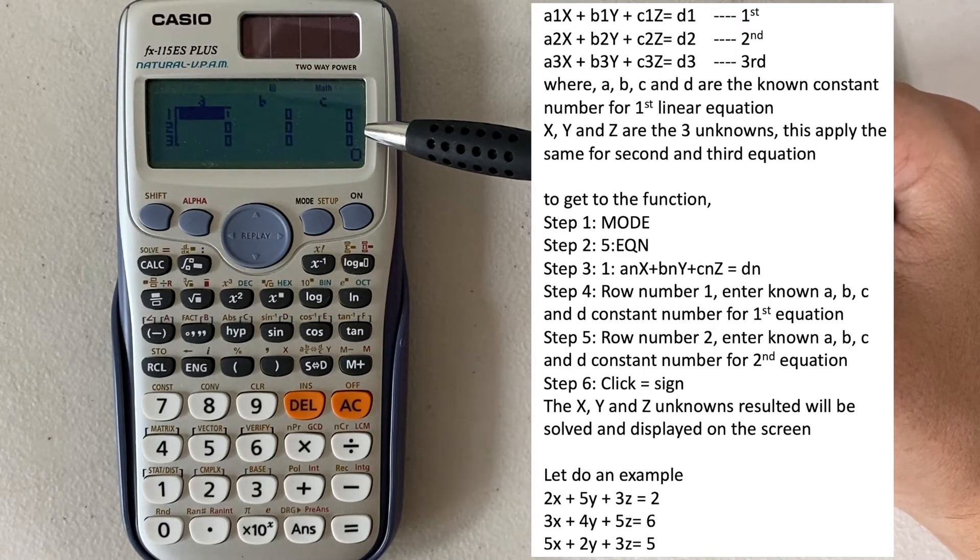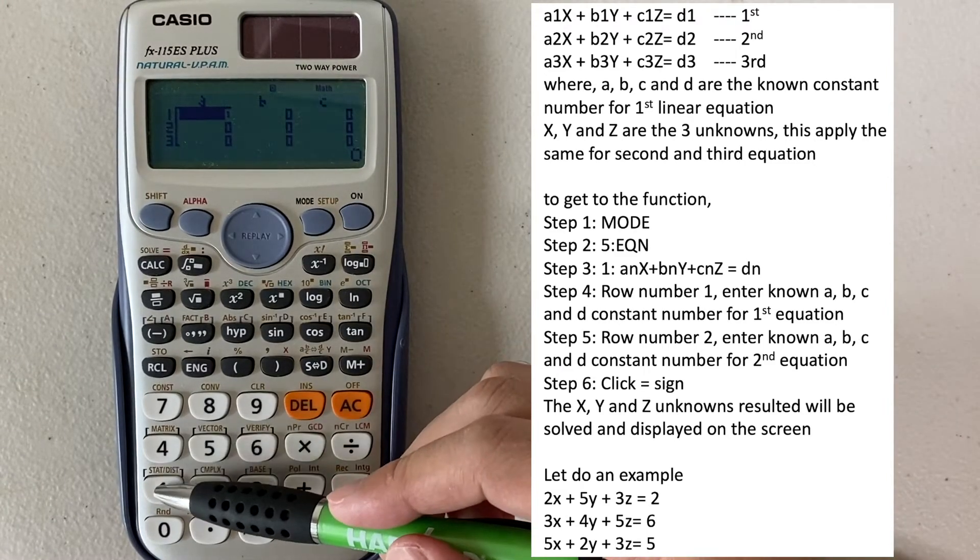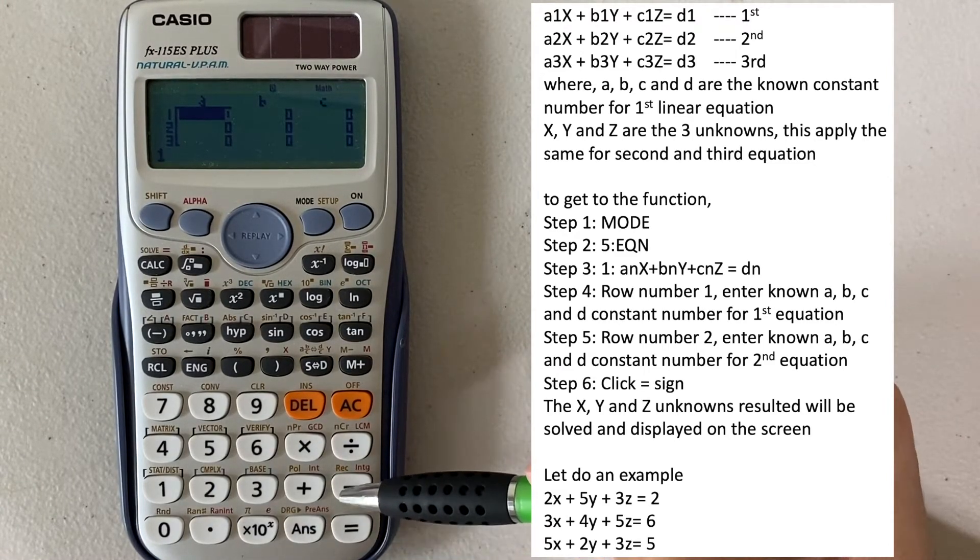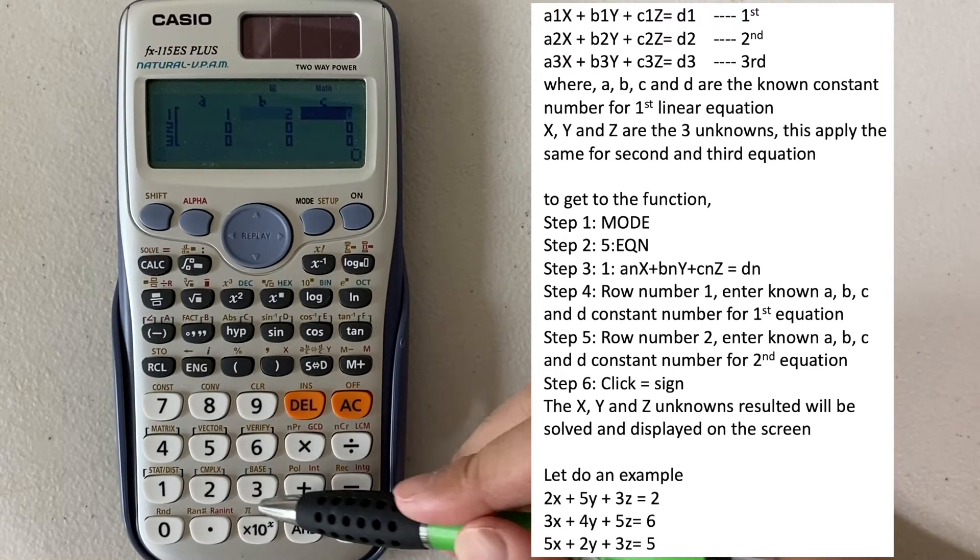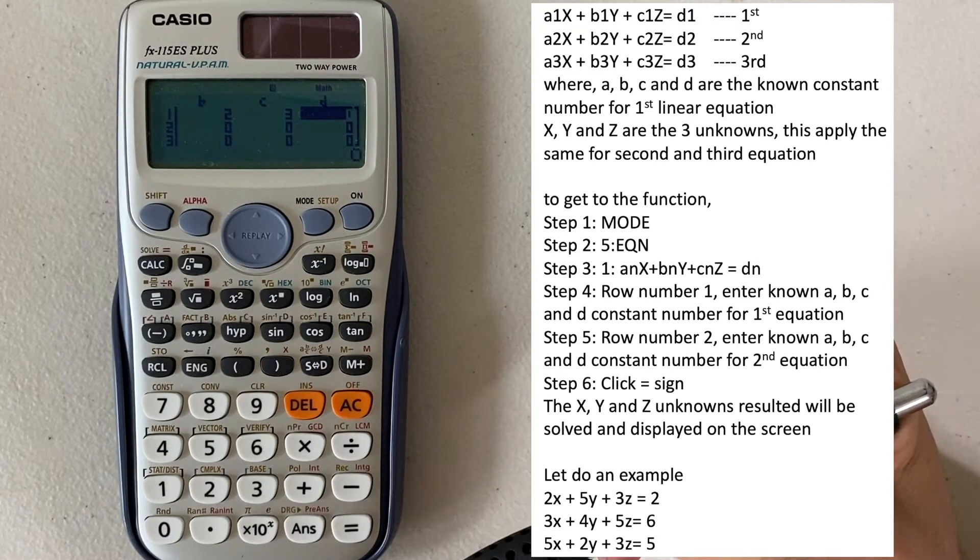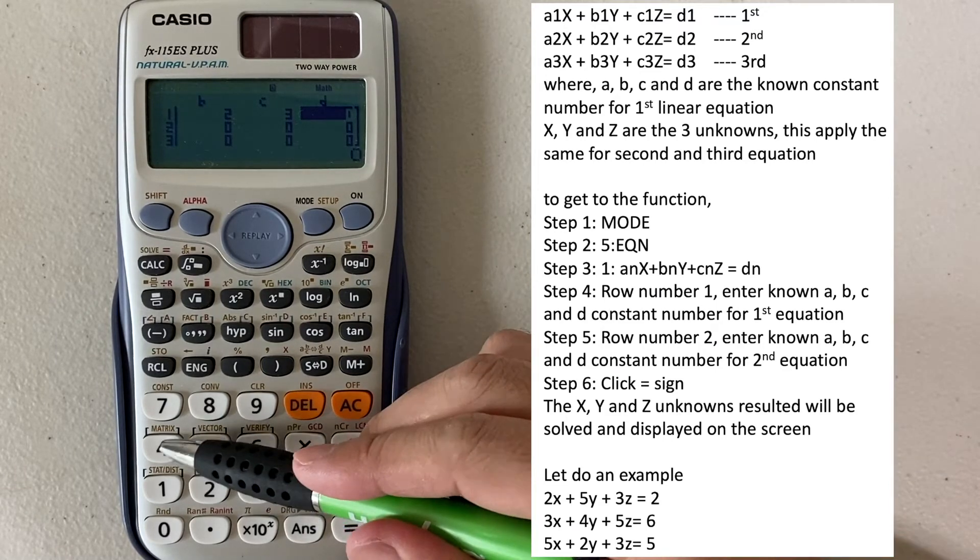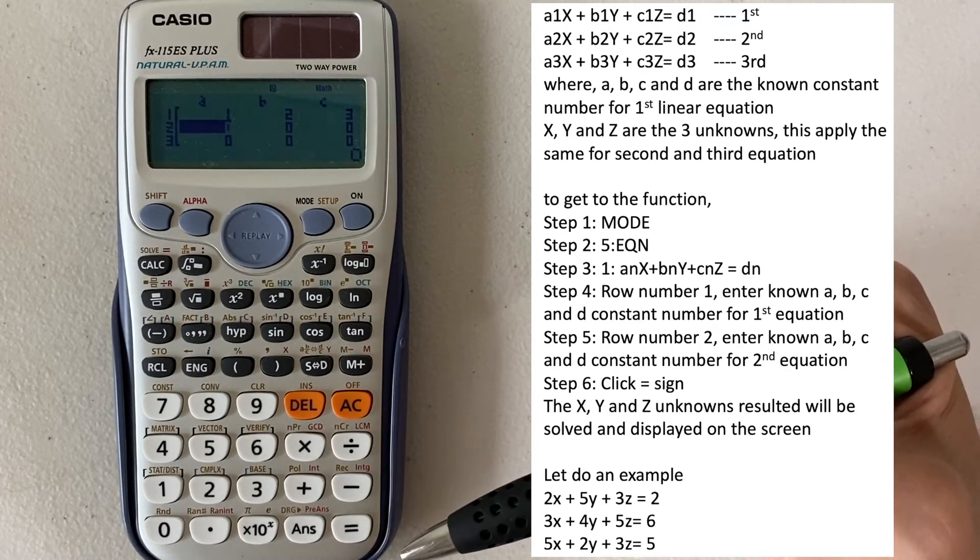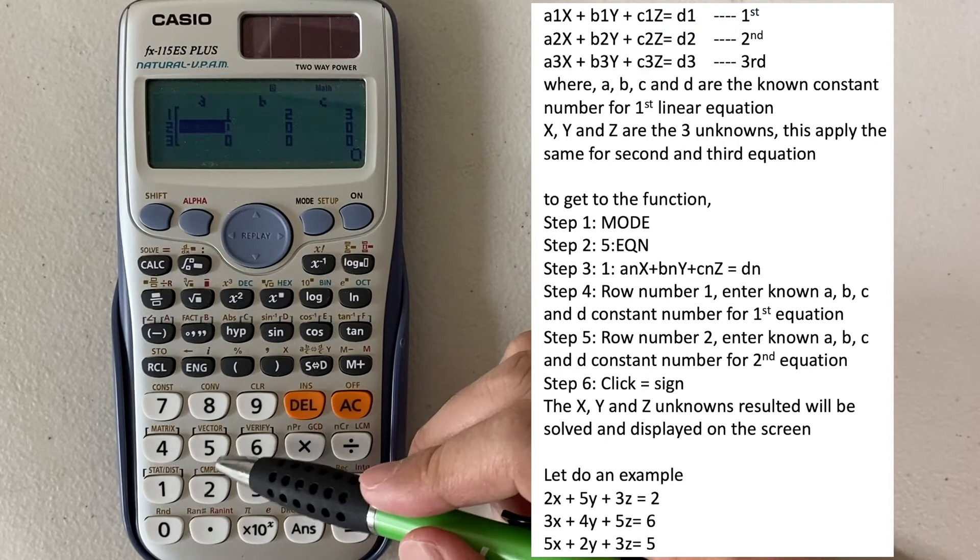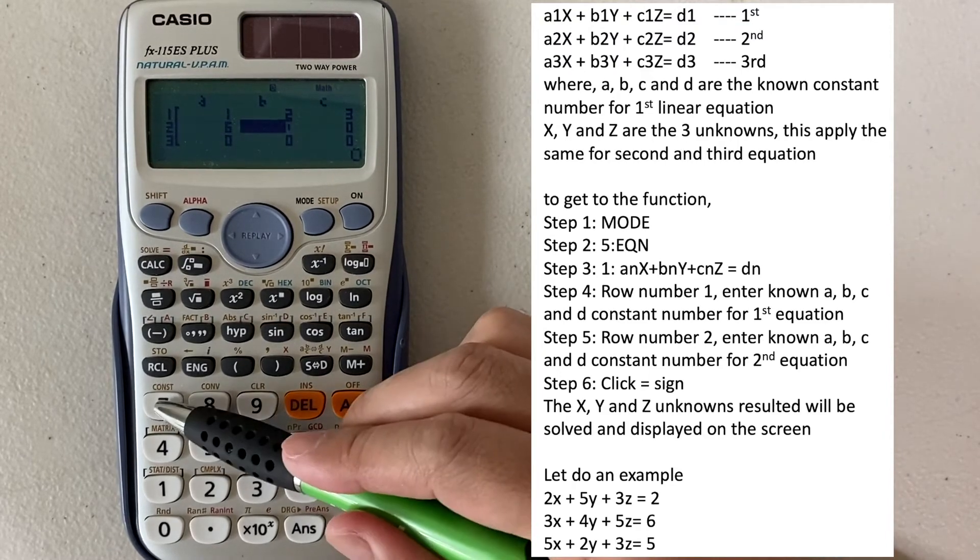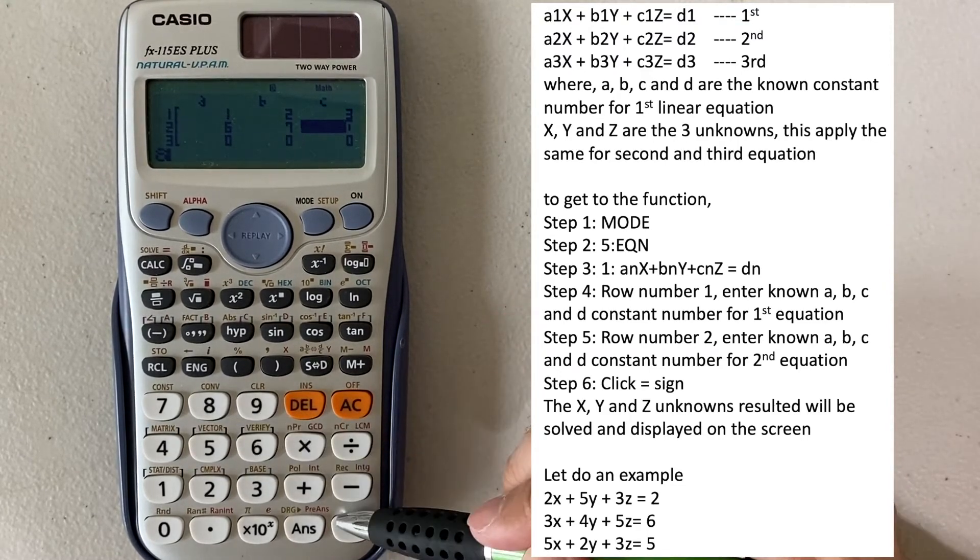So for example, you have a constant 1, 2, 3 for A, B, C, and D, let's say 4. This will be your first equation. And then for the second, if you have like 6, 7, 8, 9.